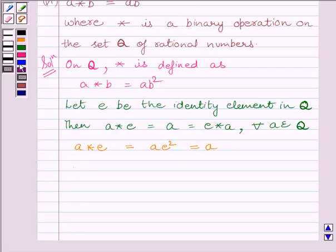Now we will find e star a. e star a equals ea squared, which must also equal a by this equation. But this is not possible.